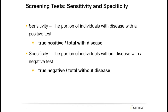Sensitivity is the portion of individuals with a disease or condition who have a positive test, also known as the test detection rate. This can be calculated by dividing true positives by the total number of individuals with the disease. Specificity is the portion of individuals without a disease who will have a negative result, calculated by dividing the total number of true negatives by the total number of individuals without the disease.